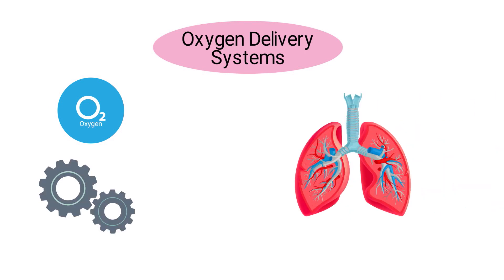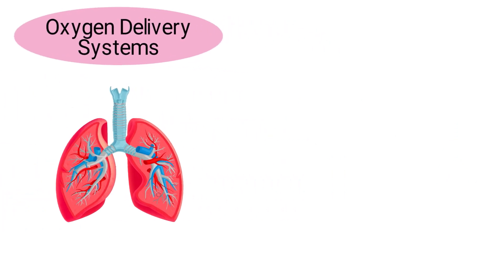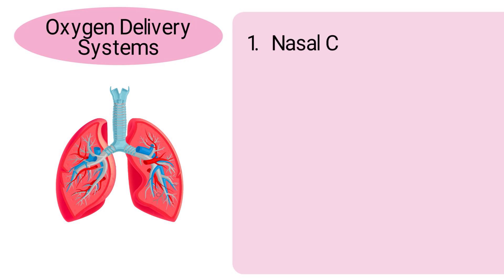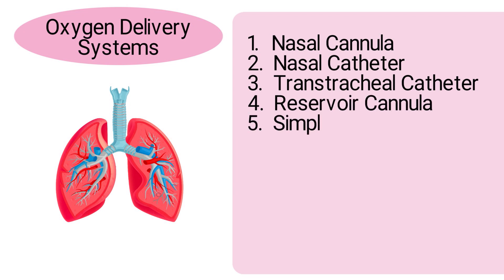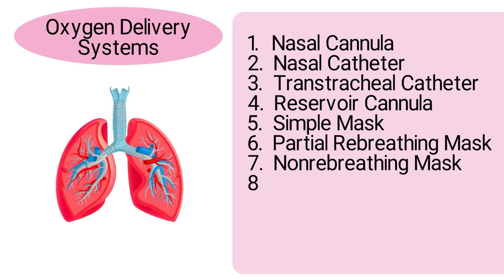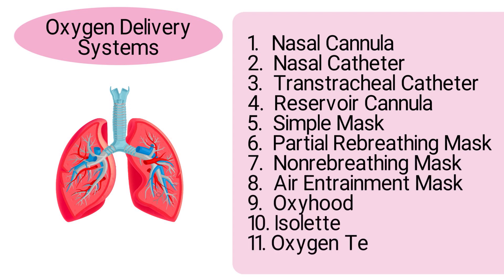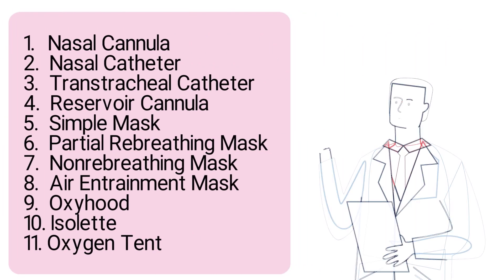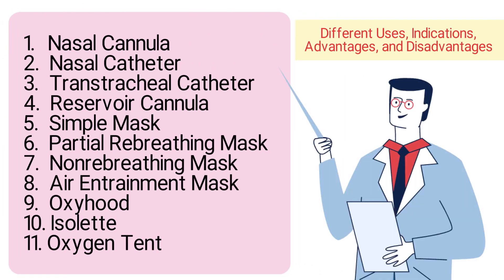Oxygen delivery requires the use of a device that facilitates gas flow to the patient's airways. Some examples of oxygen delivery systems include nasal cannula, nasal catheter, transtracheal catheter, reservoir cannula, simple mask, partial rebreathing mask, non-rebreathing mask, air entrainment mask, oxy hood, isolette, and oxygen tent. Each type has different uses, indications, advantages, and disadvantages.